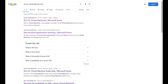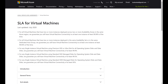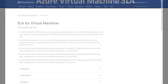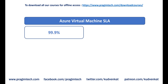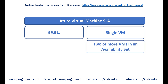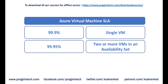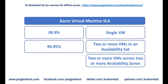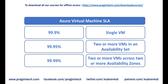If you search the internet with the search string 'Azure virtual machine SLA', you'll land on the following page — I'll have the link in the description. Microsoft guarantees only 99.9% SLA if you create just a single instance of a virtual machine in Azure. If you create two or more virtual machines in an availability set, Microsoft guarantees connectivity to at least one VM at least 99.95% of the time. On the other hand, if you create two or more virtual machines across two or more availability zones, Microsoft guarantees connectivity to at least one VM at least 99.99% of the time.